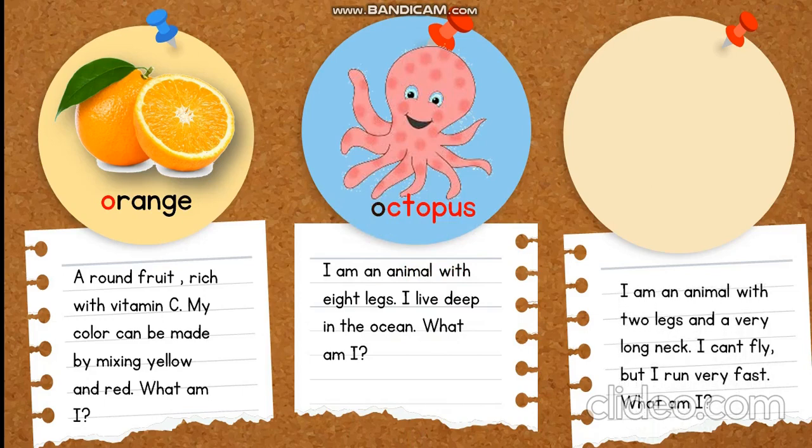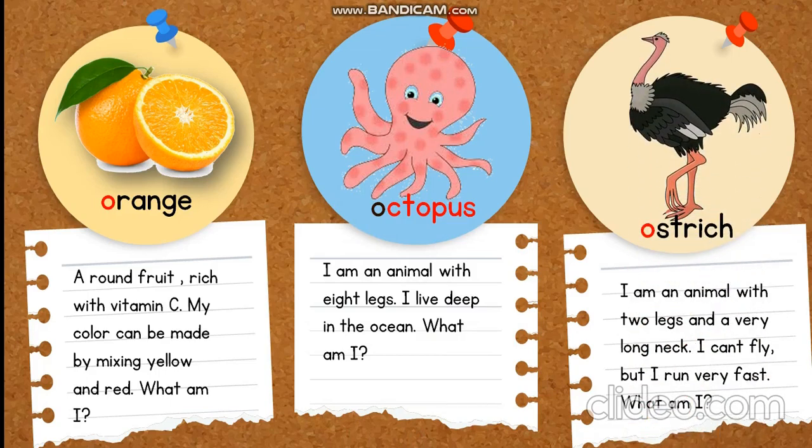I am an animal with two legs and a very long neck. I can't fly, but I run very fast. What am I? Good job! The ostrich.